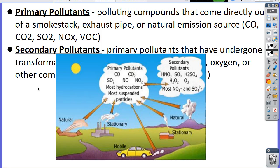Because our pollutants are in the air, they react with water, sunlight, or something else, and we end up getting secondary pollutants. Primary pollutants are the main pollutants we've talked about, especially the ones under the Clean Air Act, because the whole goal of the Clean Air Act was to reduce those pollutants.